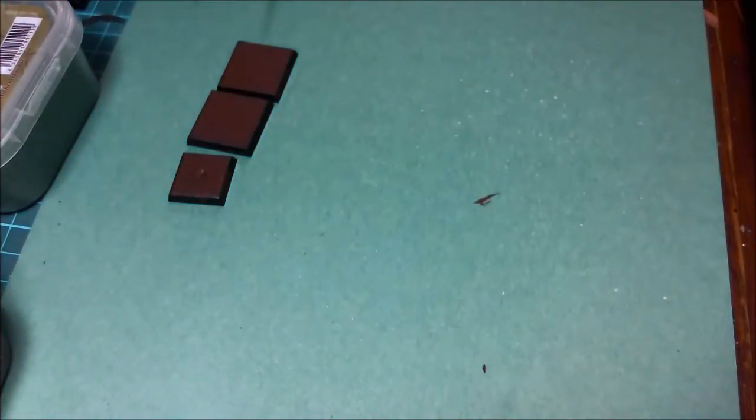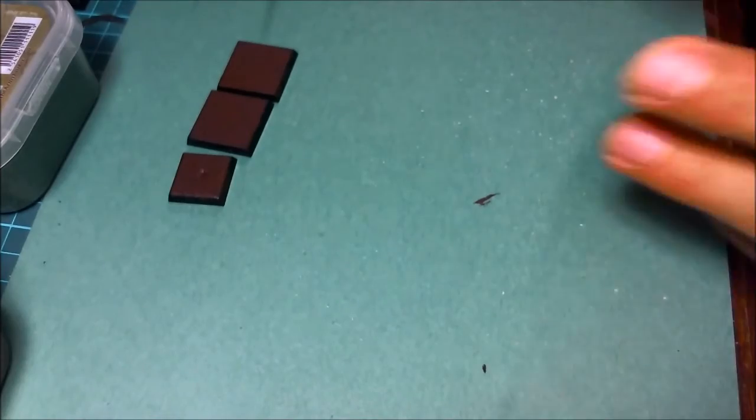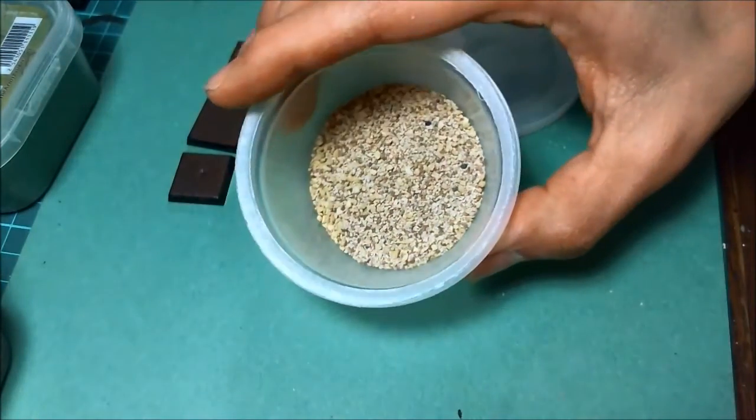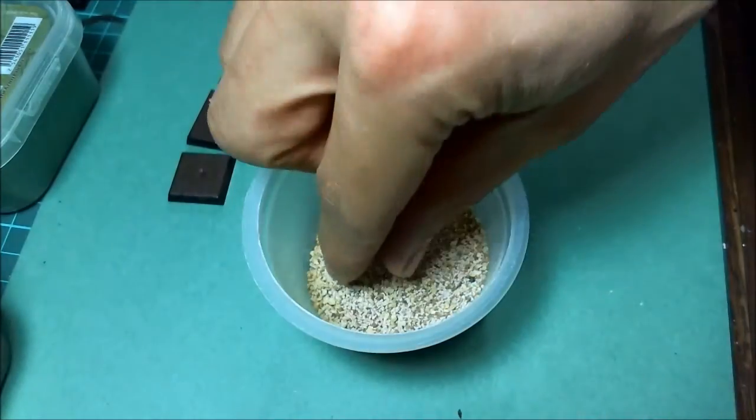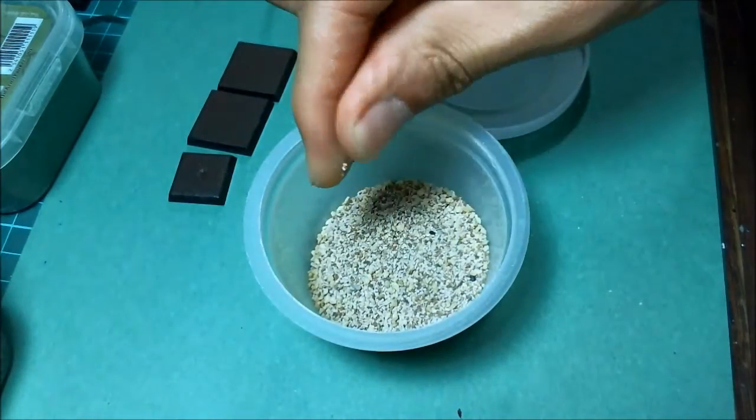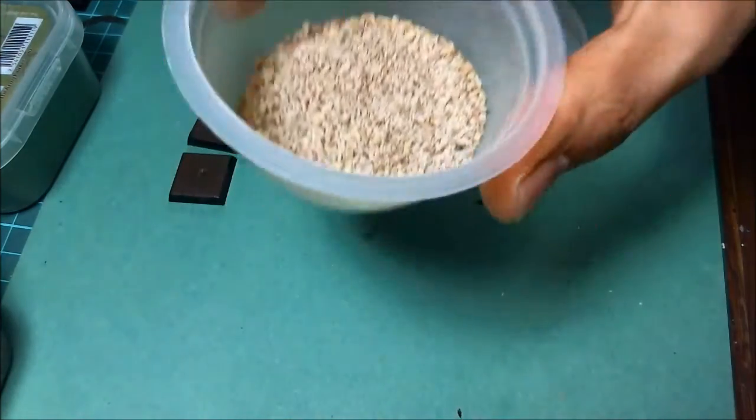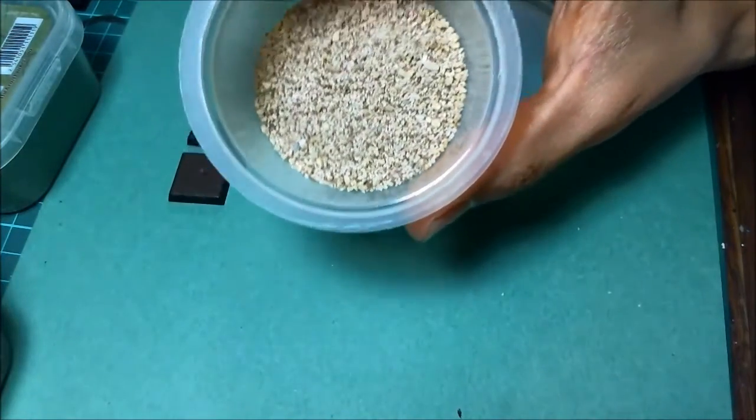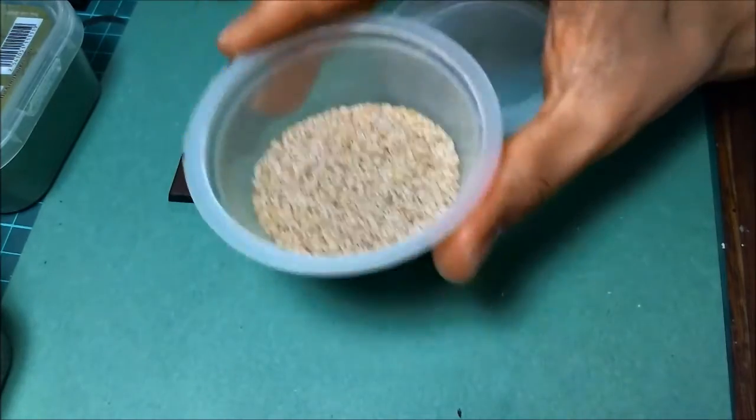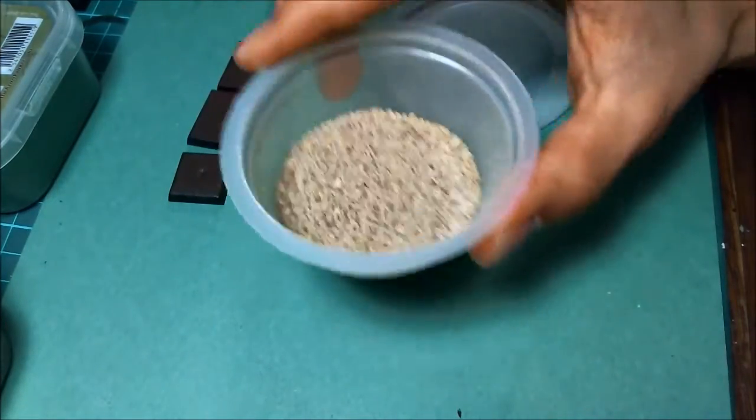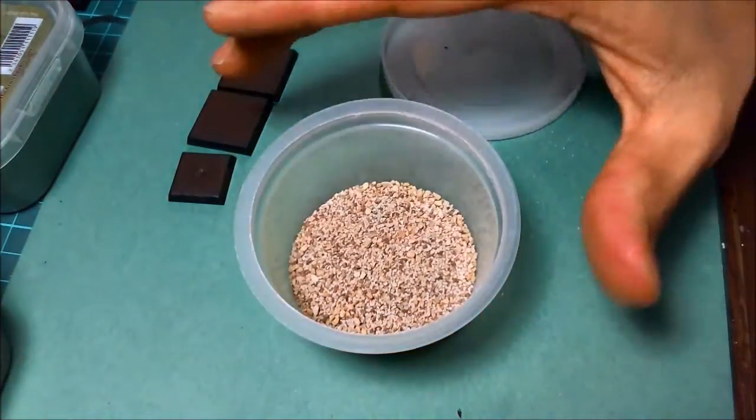You're also going to need, some people like to use flock. I'm not a big fan of flock per se, but I am a big fan of ballast. There are many different ways you can go. You can get sand. This is just a mix right here that I picked up at a local hobby store. It is just sand. It's got a few bigger pieces in there for a little bit of variance. This works just fine.